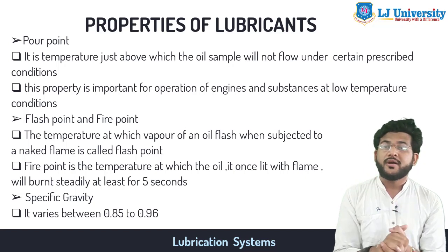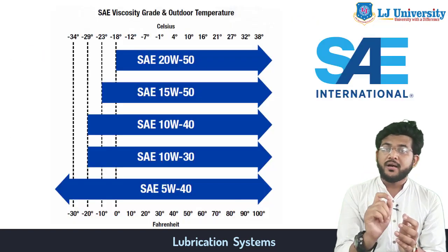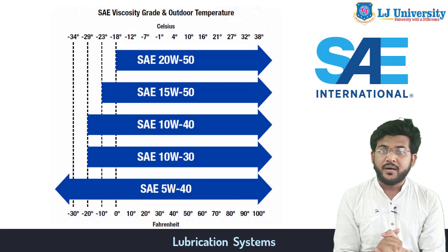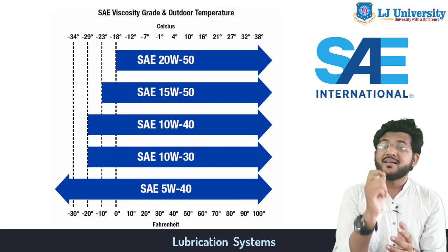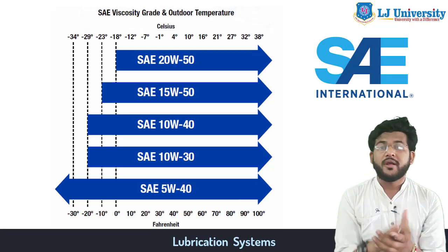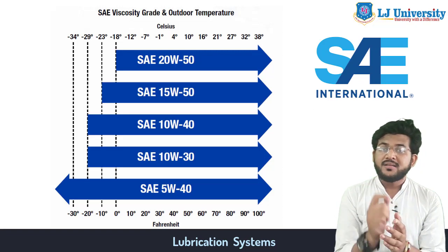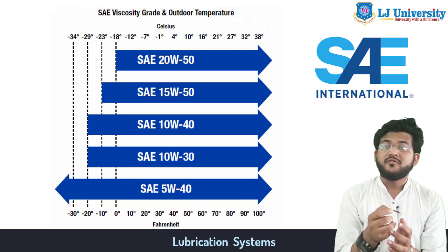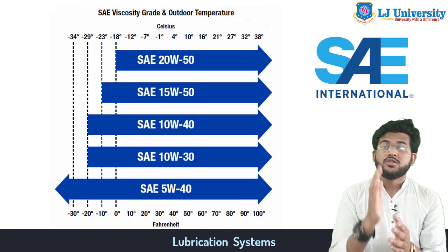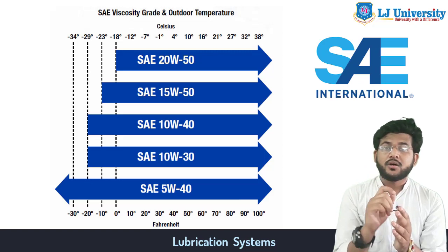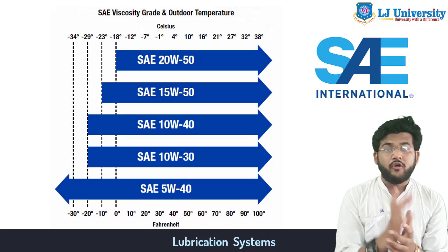Specific gravity varies between 0.8 to 0.96. For the lubrication system, there is one number called the SAE number — the Society of Automotive Engineers has recommended this SAE viscosity number for all lubrication oils. It is used for grading. The viscosity number is determined by the range of viscosities it falls within at a given temperature. For winter use it is 5W, 10W, 20W; for normal use it is 20, 30, 40.